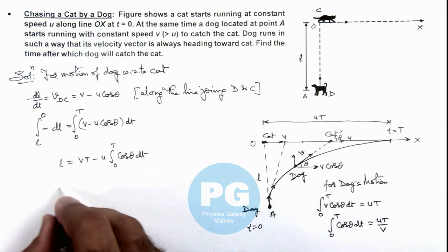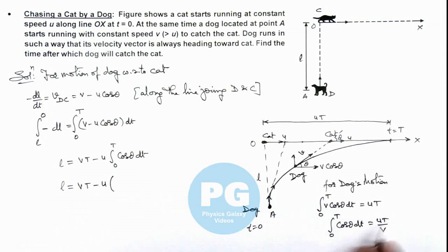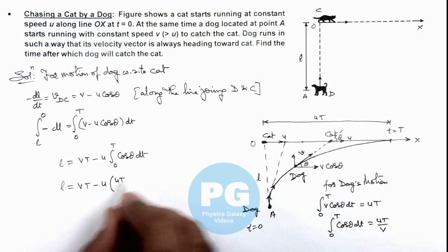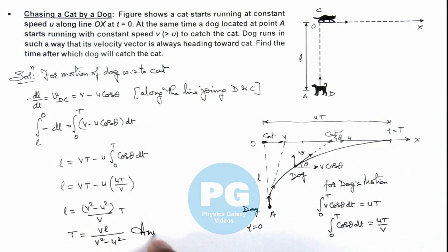You can see we are getting l is equal to v t minus u multiplied by u t by v. So on further simplifying here you can see l is equal to v square minus u square by v multiplied by t. Or solving we are getting the time when dog will catch the cat, that is v l divided by v square minus u square. That is the final result of this problem.